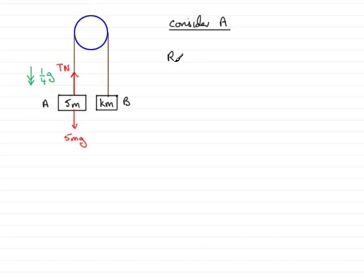So we're going to resolve downwards. Always resolve in the direction of motion. So what is the resultant force downwards? It's going to be 5mg and then we've got minus T.